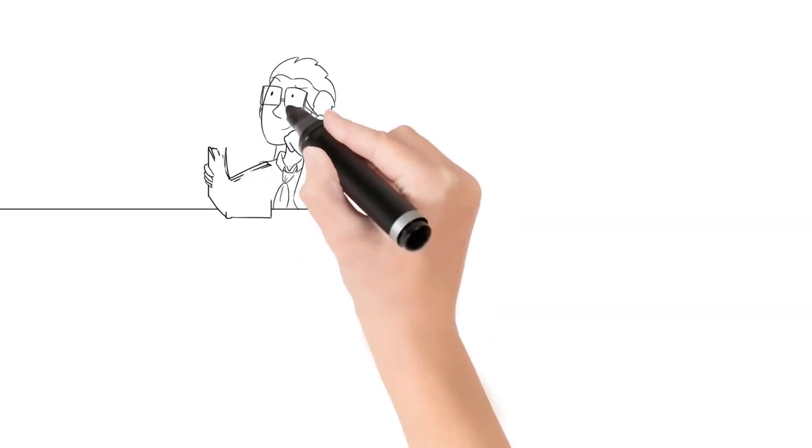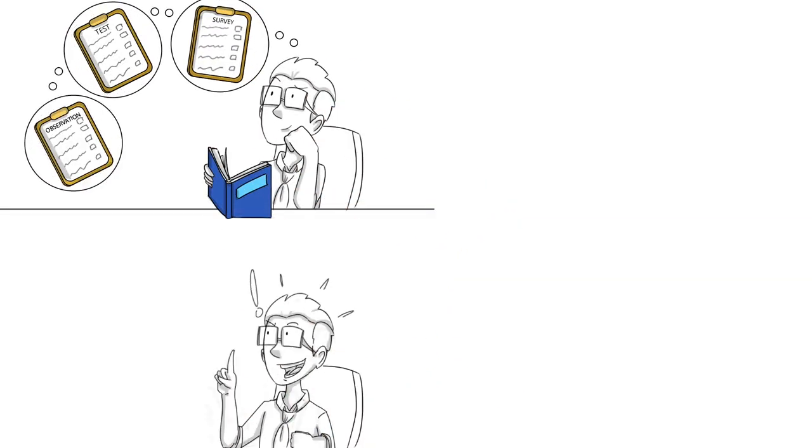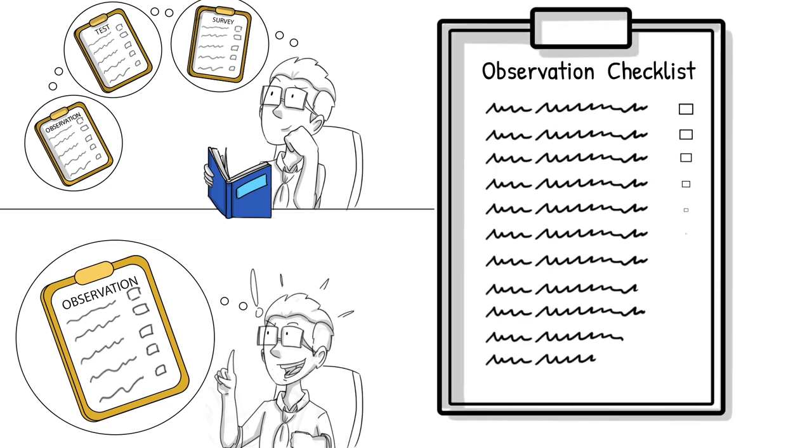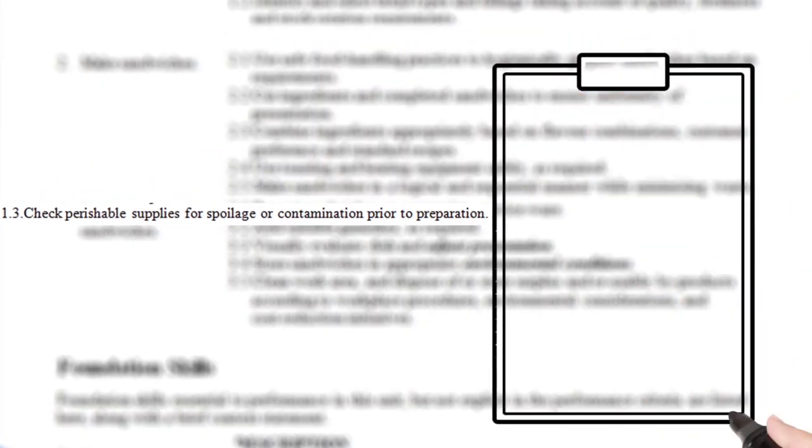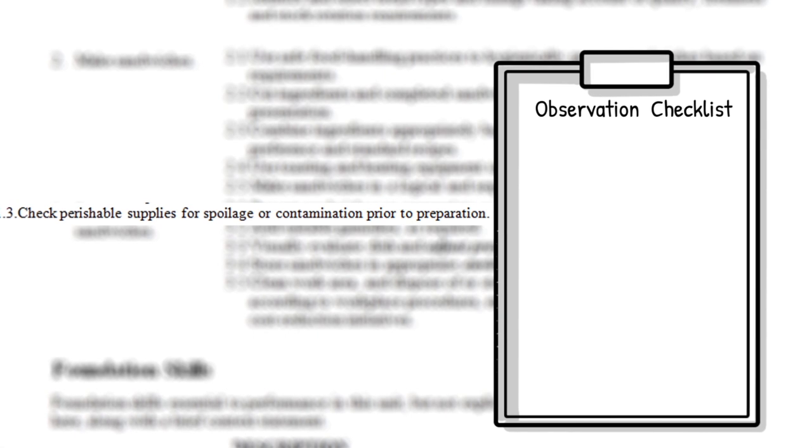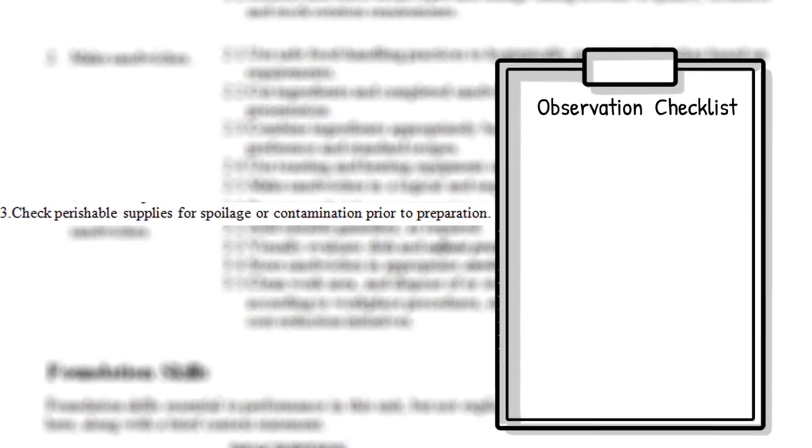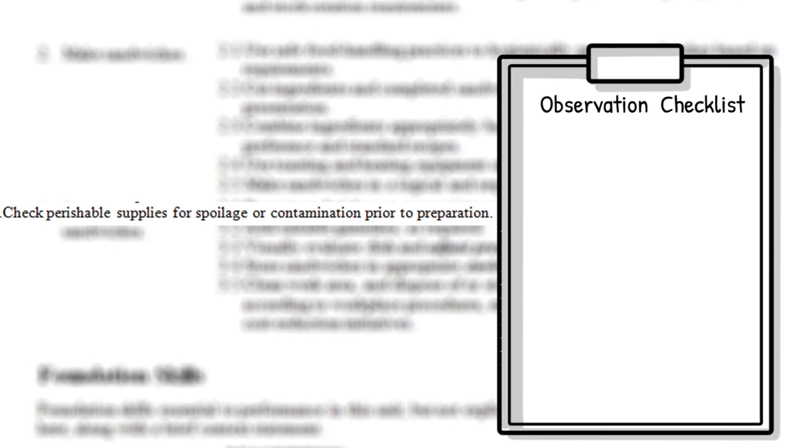Of the many assessment options, probably the simplest to assess a skill is to create an observation checklist of specific tasks that a learner needs to demonstrate correctly. In our example, I might add three tasks that would show me that the learner can perform the skills required of PC 1.3.